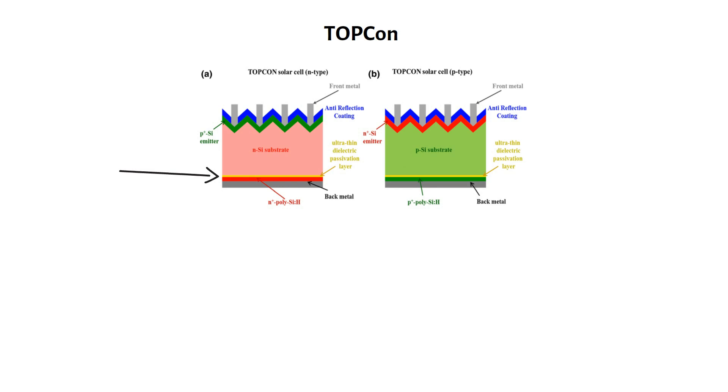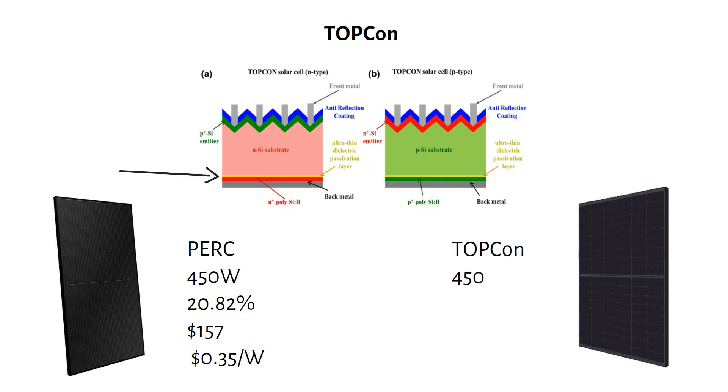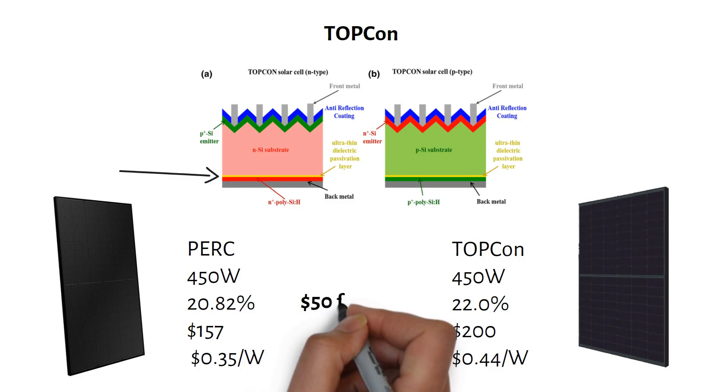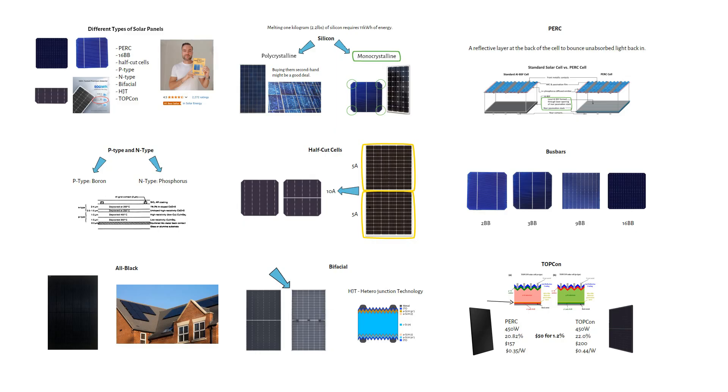Let's compare costs. A Pimar 450W panel with 20.82% efficiency will cost you 157 dollars, or about 35 cents per watt. A Canadian Solar 450W TOPCON panel with 22% efficiency will cost you 200 dollars, or 44 cents per watt. That's 50 dollars more for just 1.2% extra efficiency. Let me know if you think that's worth it in the comments.